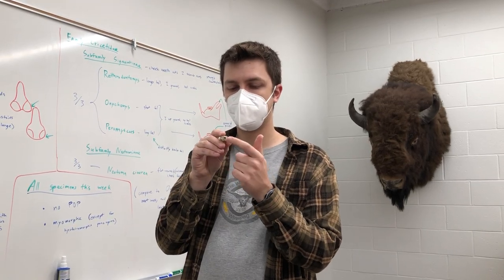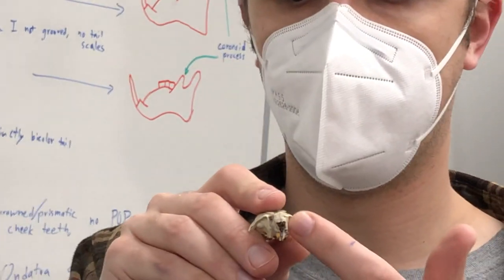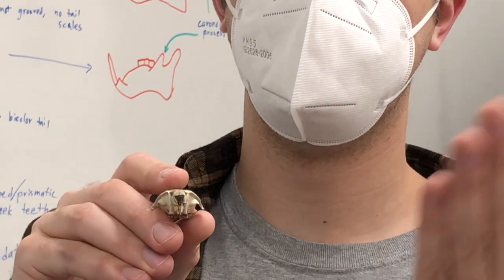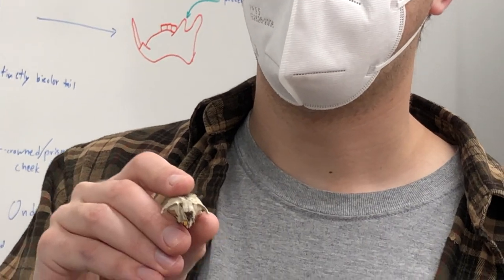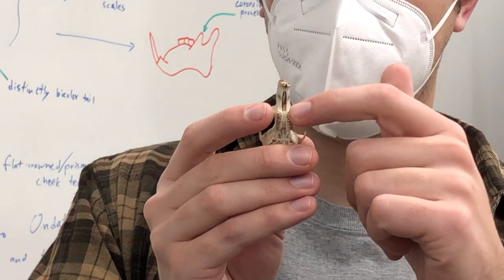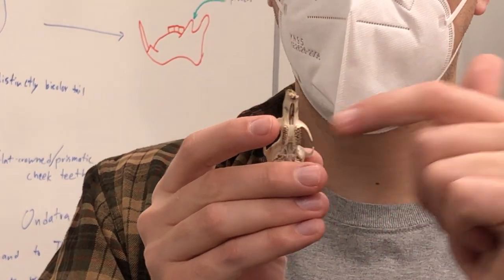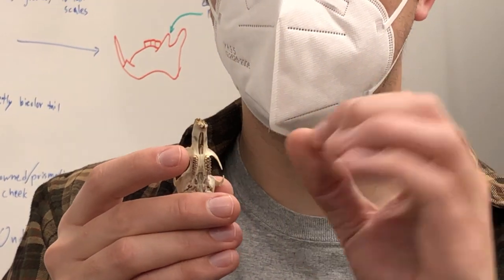Well, the main way is that this is myomorphic. So it has those vertical slits versus the sciuromorphic flat plate of the pocket gopher. Another way is just that this has a lot more kind of jagged back and forth prismatic teeth versus the simple circles of the pocket gopher.